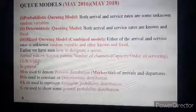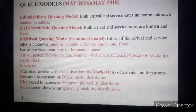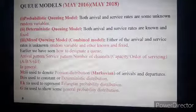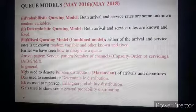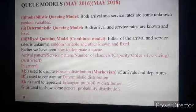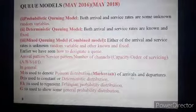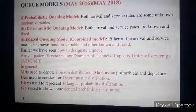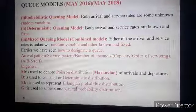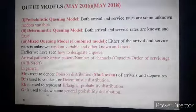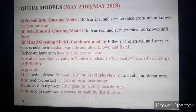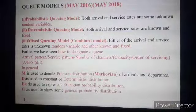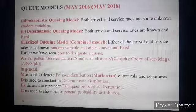In the model designation, we use capital M, D, E, and G. Capital M denotes Poisson distribution or Markovian distribution of arrivals and departures. Capital D defines deterministic or constant distribution. E subscript k represents the Erlangian probability distribution. Capital G represents general probability distribution. This is the introduction to queuing models. In the next lecture, we will discuss the different models one by one and practice numericals based on these models. We will stop here and continue in the next lecture.